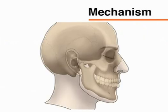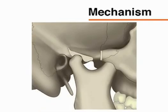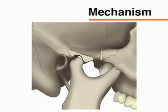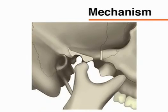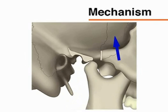Dislocation occurs when the mouth is wide open and the condyle moves onto the articular eminence and slips forward, preventing the mouth from closing. The masticatory muscles tighten and hold the mandible in this new, aberrant position, which causes the muscles to contract further and lock the mandible in this painful position.